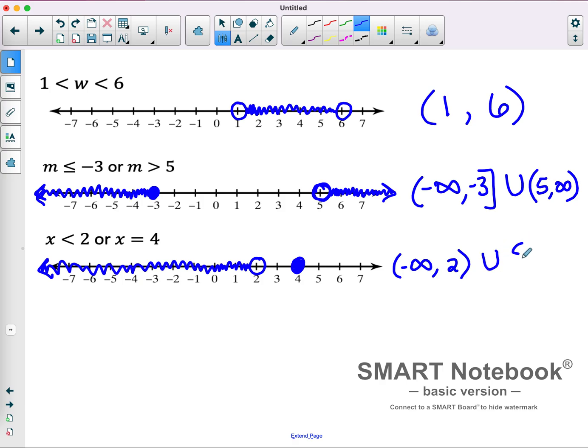And then we have a solitary number. That one number is just 4. And it goes in these squiggly brackets called braces.